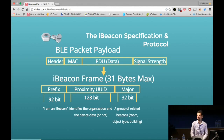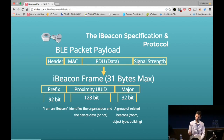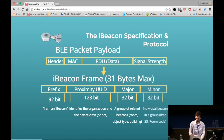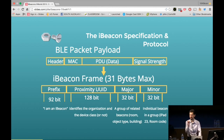The major code usually identifies the type of device the beacon is representing. So in this context, the major code might be used to represent classrooms, and a different major code to represent kitchens or restaurants — it's all down to your individual use case and how you want to program them. The minor code usually represents a given entity, so you might have one major code for classrooms and a minor code representing an individual classroom.